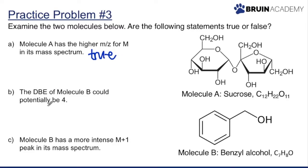Part B: the DBE of molecule B could potentially be 4. DBE helps us determine whether we have pi bonds or rings. A DBE of approximately 4 suggests a benzene ring. Looking at the structure of benzyl alcohol, there is indeed a benzene ring present. So this is also true.